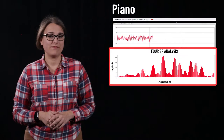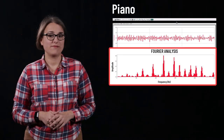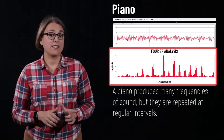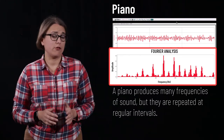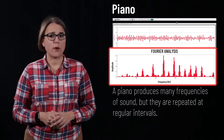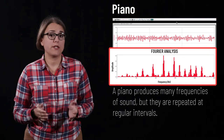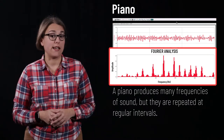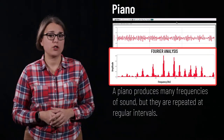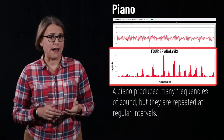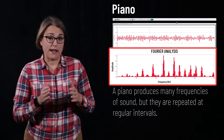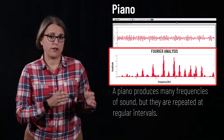Next, let's look at the Fourier analysis of the sound made by a piano. This piano is playing a single note but does not produce one single frequency of sound wave. There are more frequencies of waves represented in this sound compared to the tuning fork. Note that the frequencies that do exist are periodic — that is, they are spaced out at regular intervals.